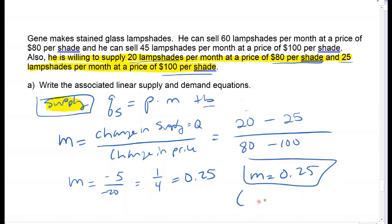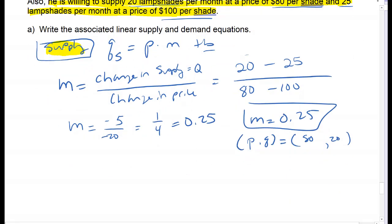I need to find my y-intercept, which means I need to use one of my points. Just make sure you're careful with your P's and Q's—there are two points, so you can pick either one. I'll use the first: 80 is the price, which goes in the P spot, and 20 is the quantity supplied.